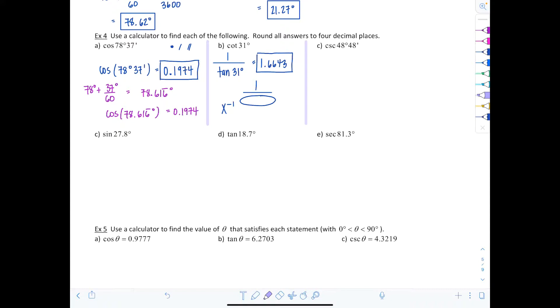Similarly we have cosecant of 48 degrees and 48 minutes. Cosecant of theta, remember that's the reciprocal of sine. So I'm going to punch in 1 over sine of 48 degrees and 48 minutes, and you should get 1.3291. Again if you do not have the minutes feature on your calculator, no problem. 48 divided by 60 is 0.8, so alternatively you could do 1 over sine of 48.8 degrees and still get 1.3291.